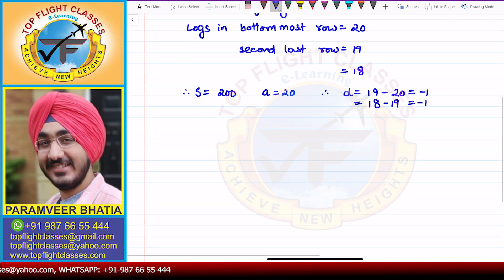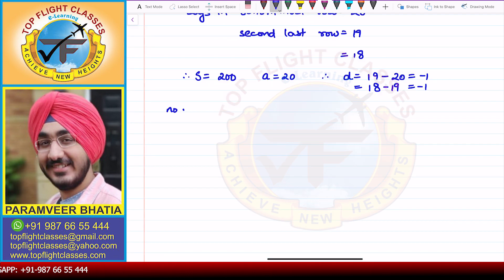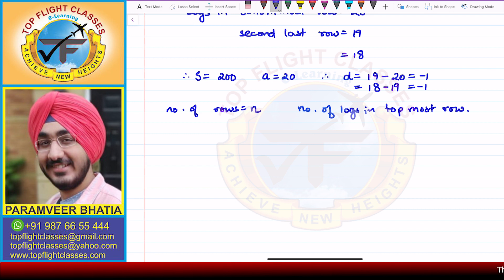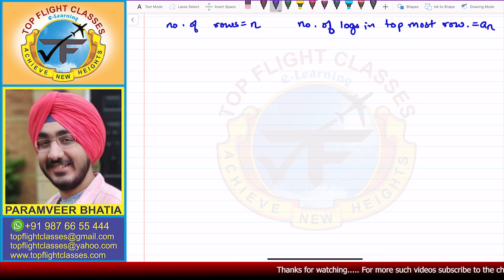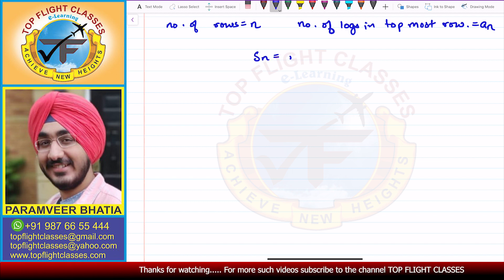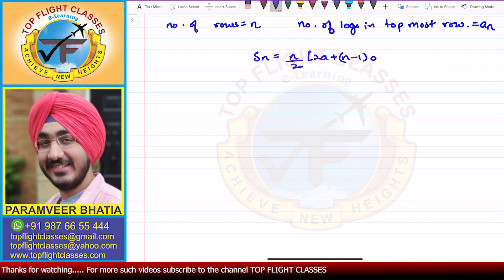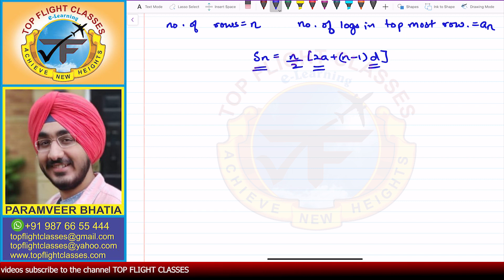Using these three things, I have to find the number of rows and the number of logs in the topmost row. The number of rows will be equal to n — that is the number of terms. And the number of logs in the topmost row will be equal to Aₙ. First of all, we write the sum of n terms, which is given by Sₙ equals n by 2 times (2A plus (n minus 1) times D). In this case we have D, A, Sₙ, and n.